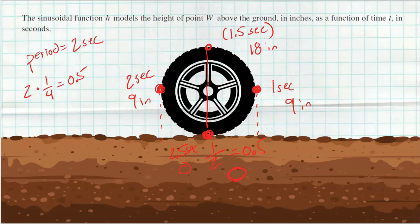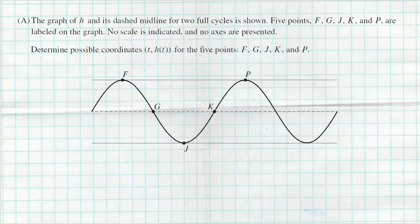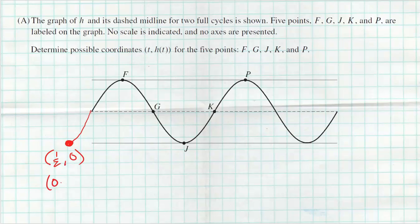If you understand that concept of moving around the cycle, the next parts become easy. The graph of h and its dashed midline for two full cycles is shown, with points F, G, J, K, and P labeled. At half a second we start at ground level zero inches. After one full rotation at 2.5 seconds we're back to zero — a difference of one full period of two seconds.